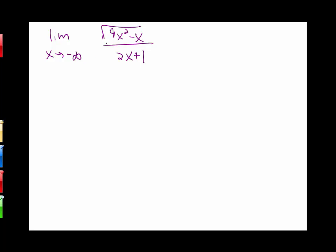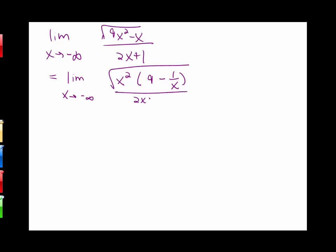We want the limit as x goes to negative infinity of the square root of 9x squared minus x, all over 2x plus 1. Using the same factoring technique, we write the numerator as √(x² · (9 − 1/x)), all over 2x plus 1, and then split the square root into √(x²) times √(9 − 1/x) over 2x plus 1.